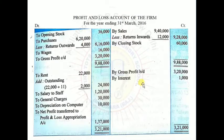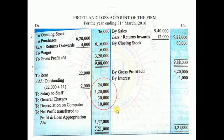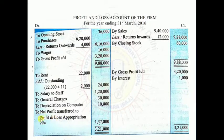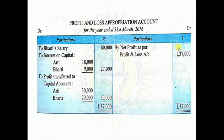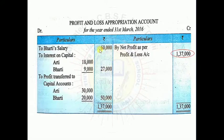Arti's capital and Bharti's capital both go to balance sheet. Now let's close the P&L Account. Credit side total: Rs.3,21,000. Subtract all debit entries — balancing figure is Rs.1,37,000. This Rs.1,37,000 net profit transfers to the P&L Appropriation Account credit side. So net profit of Rs.1,37,000 is brought down to P&L Appropriation Account.